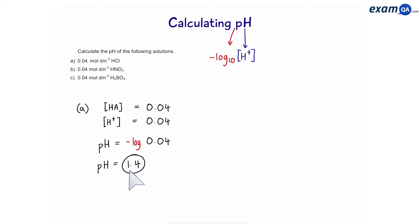Okay, let's go to B. Now, in B, we have nitric acid, 0.04 mole per dm cubed. So, the concentration of HA is 0.04. Now, you might have noticed something. We don't have to do any more calculations because the answer here is going to be the same for part A.